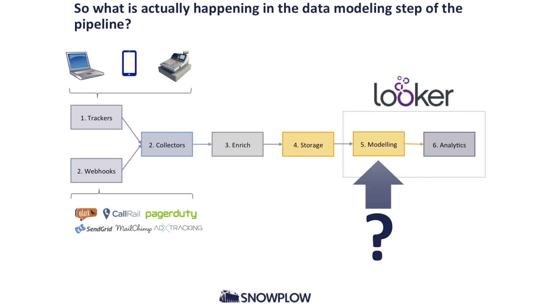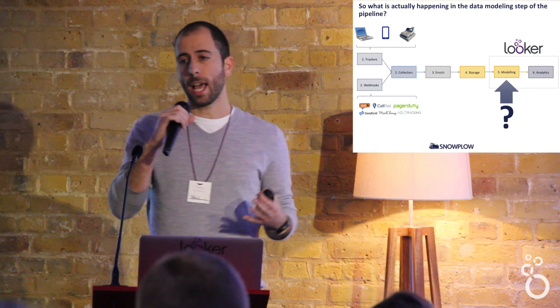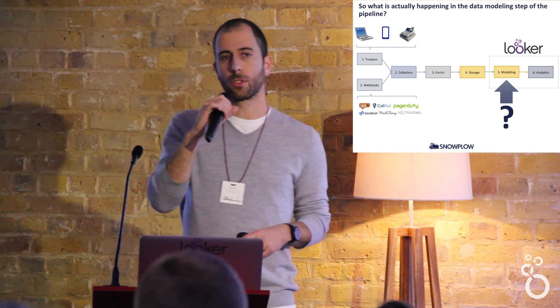What does Looker do on top of Snowplow data? It takes that very detailed, very granular, one line of data for every single event that you can access via SQL, and it turns it into something that anyone can access. But let's dive in in a bit more detail. What's going on in that event data modeling step that's so interesting? And why is that step so hard to perform if you don't have a tool like Looker? If we can understand the value in that step, then we can really understand why we're so keen about Looker at Snowplow.